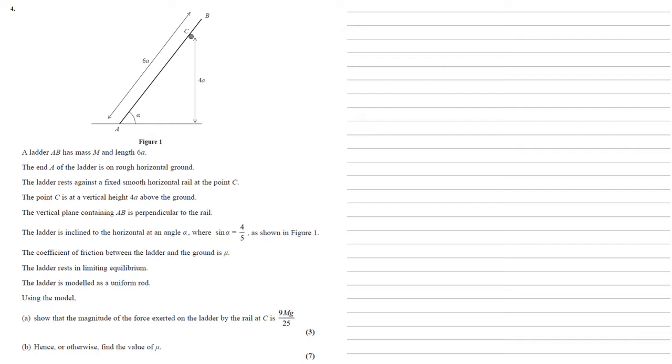Ladder AB has mass M and length 6A. The end A of the ladder is on rough horizontal ground. The ladder rests against a fixed smooth horizontal rail at the point C.